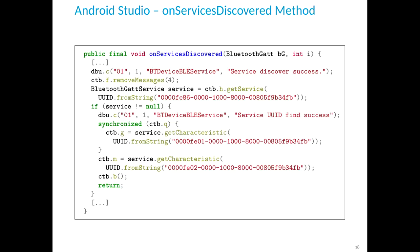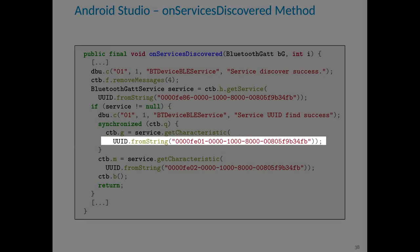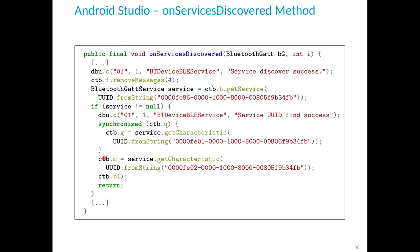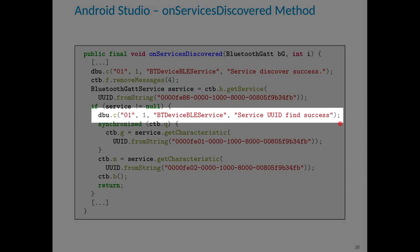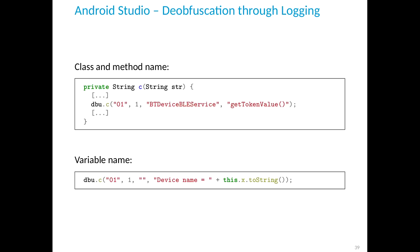I found one class containing the onServicesDiscovered method, which is very interesting because it contains the UUIDs used by the characteristics and services in the GATT layer — the same ones I found with Wireshark. There are also strings in this method, which appear to come from a logging factory. You can use these strings for deobfuscation — for example, extracting the class name, method name, or sometimes even the variable name from them.